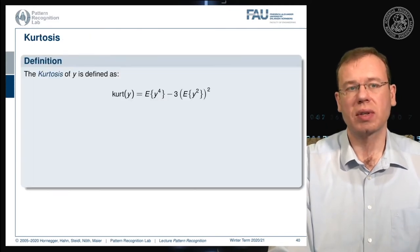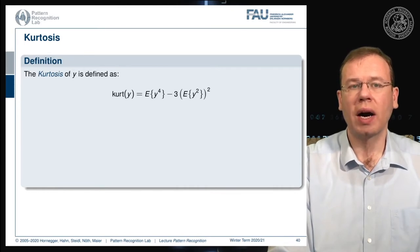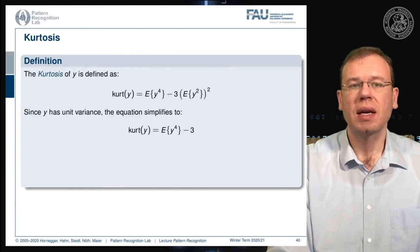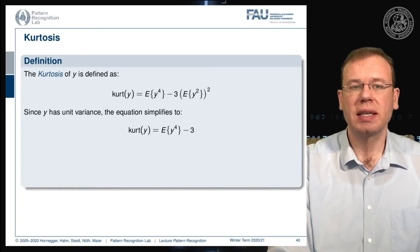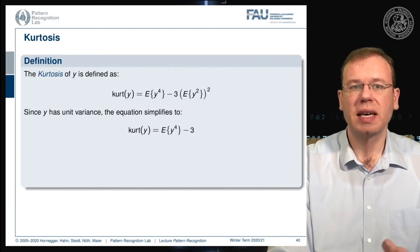Let's start with kurtosis. The kurtosis is defined as the expected value of y to the power of four, minus three times the square of the expected value of y squared. For a zero-mean, unit-variance variable, this simplifies to E[y⁴] minus three, since the covariance matrix is the identity matrix, giving a factor of three.